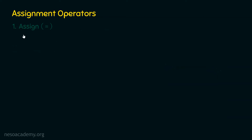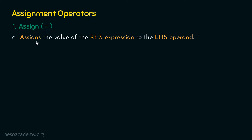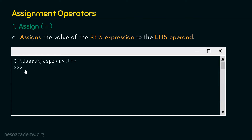The first operator is the assign operator, denoted by the single equal sign. The job of the assign operator is to simply assign the value of the RHS expression to the LHS operand. First, the RHS expression will be evaluated, and the result of the evaluation will get stored within the LHS operand. This storage is performed by the assign operator. Let's understand this with an example by opening our command prompt and activating the Python interactive shell.